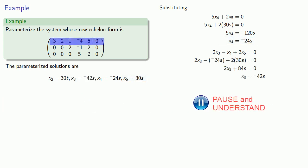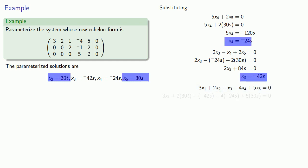The first row gives me the equation 3x1 plus 2x2 plus x3 minus 4x4 plus 5x5 equals 0. Substituting in these values, I get my value for x1.